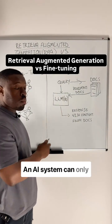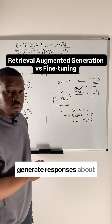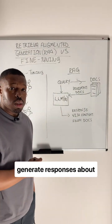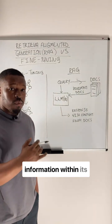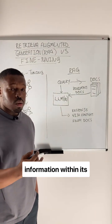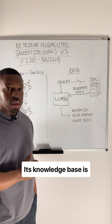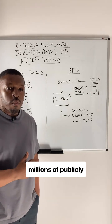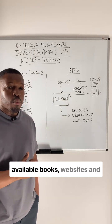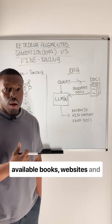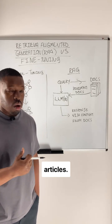An AI system can only generate responses about information within its knowledge base. Its knowledge base is millions of publicly available books, websites, and articles.